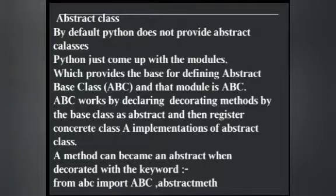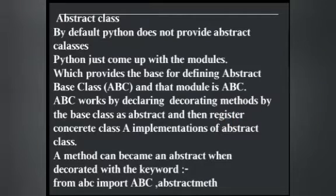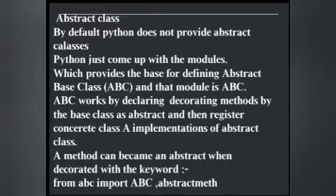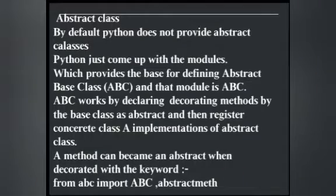Python has come up with a module that provides the base for defining abstract classes. Python only provides modules for this; it doesn't define the abstract class by default. There is a module named ABC, and with this module you can create your abstract class. To create an abstract method, you write: from abc import ABC, abstractmethod.